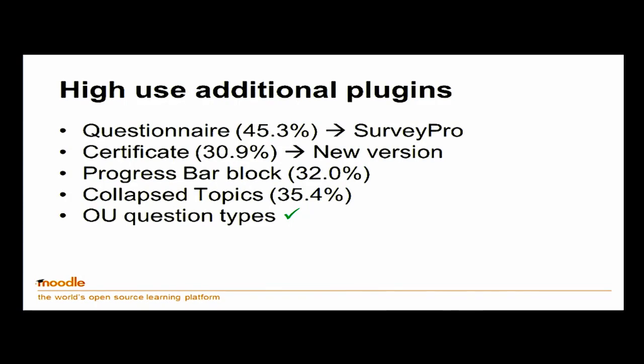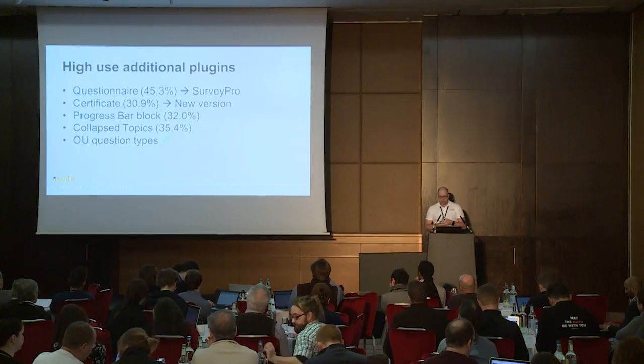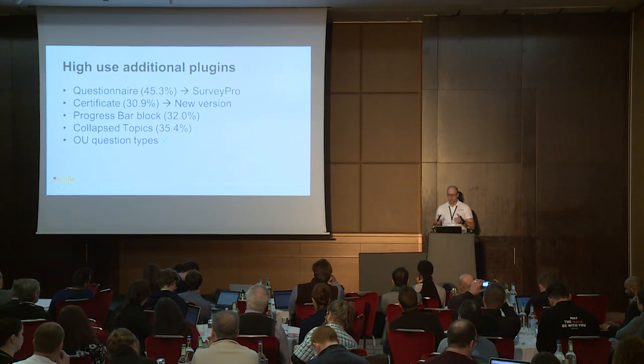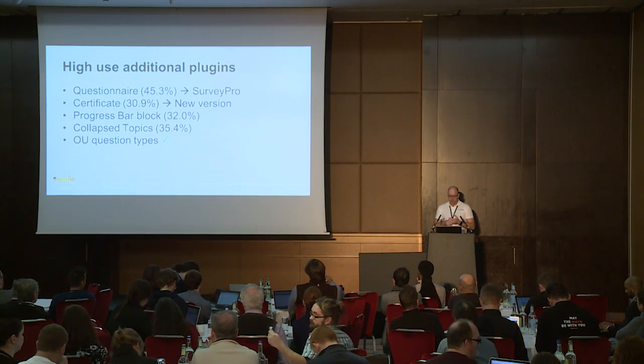The highest use additional plug-ins: if you're looking for popular things to try on top of standard Moodle, Questionnaire is out there. There is also an amalgamation of various surveying tools in the ever-still-to-come Survey Pro. Certificate — the person who maintains it is an HQ developer who adopted it, but now there's a resurgence; it's being redeveloped and hopefully a new version is coming that may make it into core. The progress bar is my own — I encourage you to try it, but it will never be part of core Moodle. Collapsed Topics won't be part of core either, but you're welcome to try it. The OU question types already have the tick — they're in.